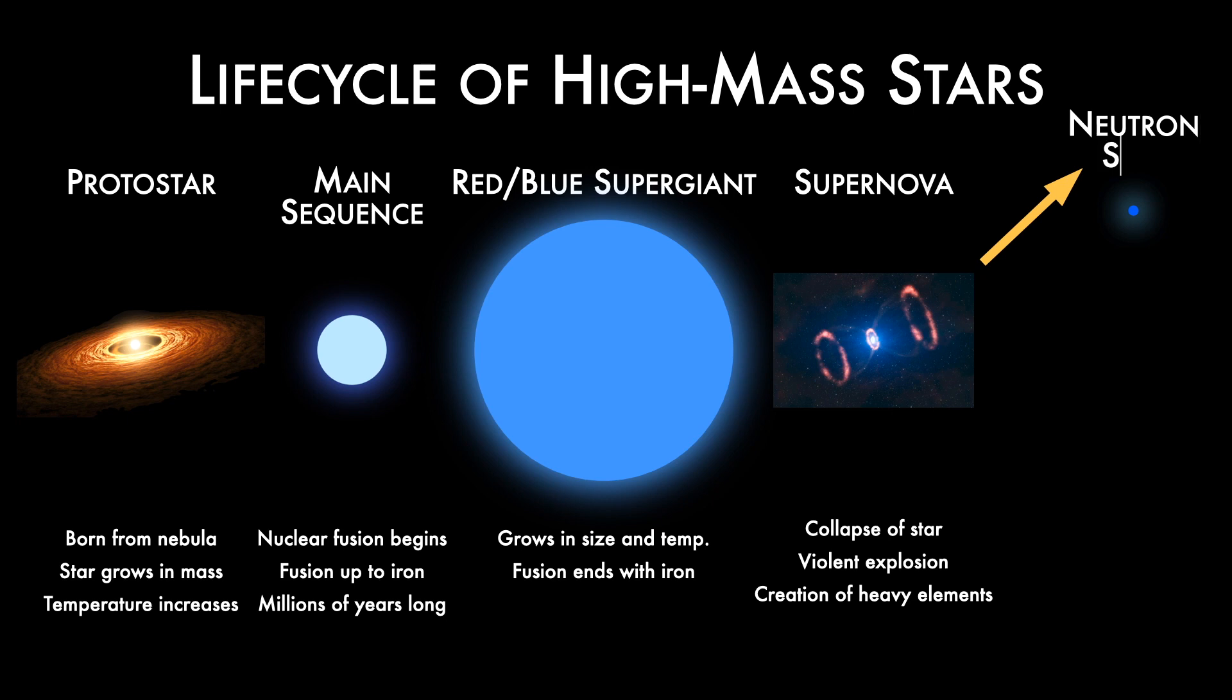After a supernova, a high-mass star faces one of two fates. It may either become a neutron star or if its mass is great enough, it can become a black hole. Neutron stars, as the name suggests, are the remnants of high-mass stars and are made primarily of neutrons. During a supernova, immense gravitational pressure causes the electrons and protons of atoms to collide. As this occurs, their charges cancel and they become neutrons.